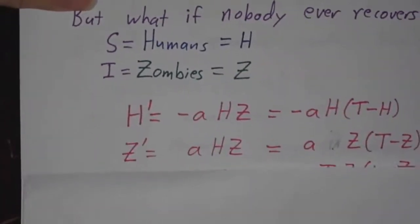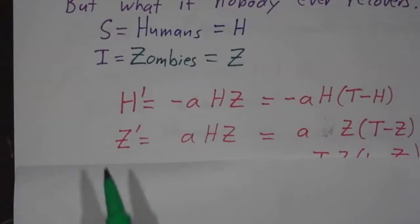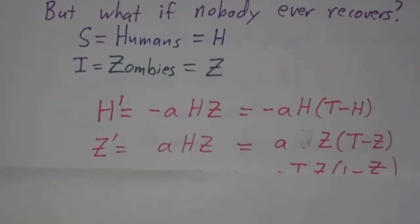So our equations are: the number of humans only goes down because humans disappear at a rate proportional to how often humans meet zombies. We could write that in terms of just H, because the number of zombies is the total population minus the number of humans. The rate at which the number of zombies increases is proportional to the rate at which humans meet zombies.